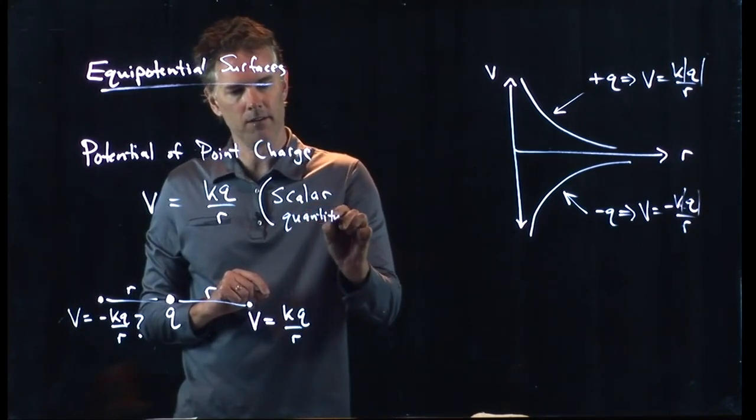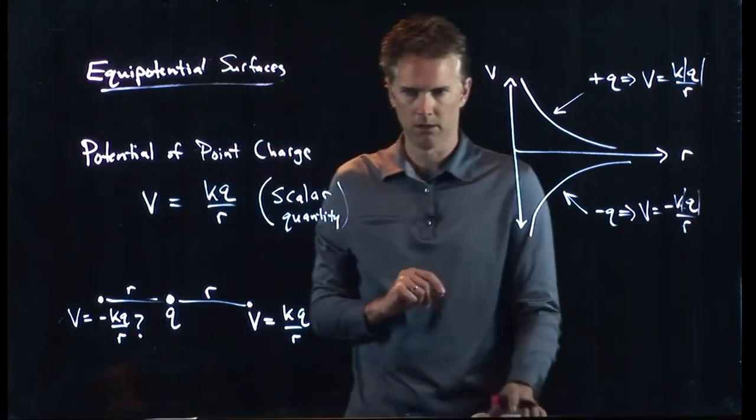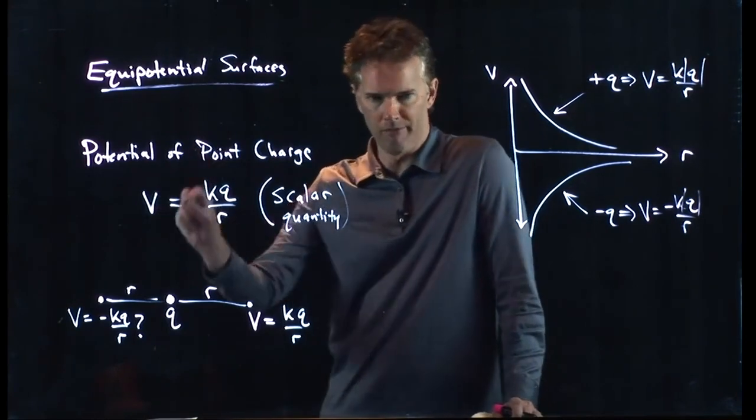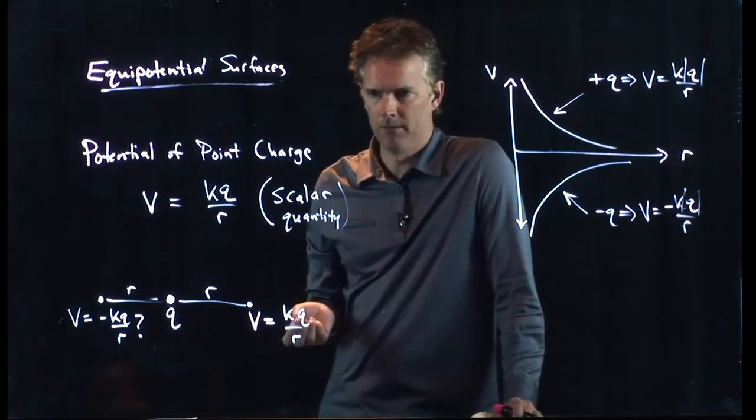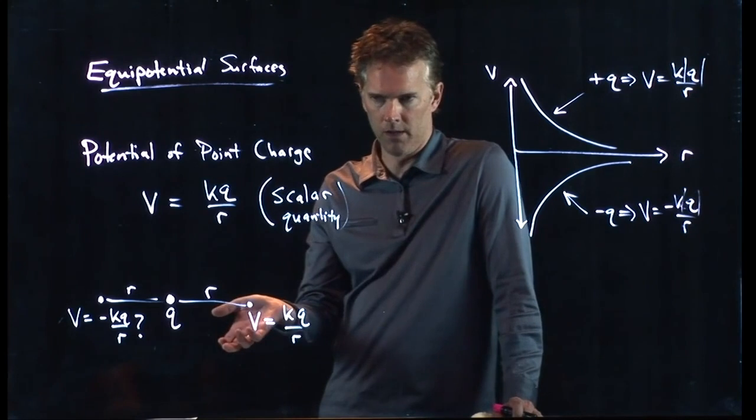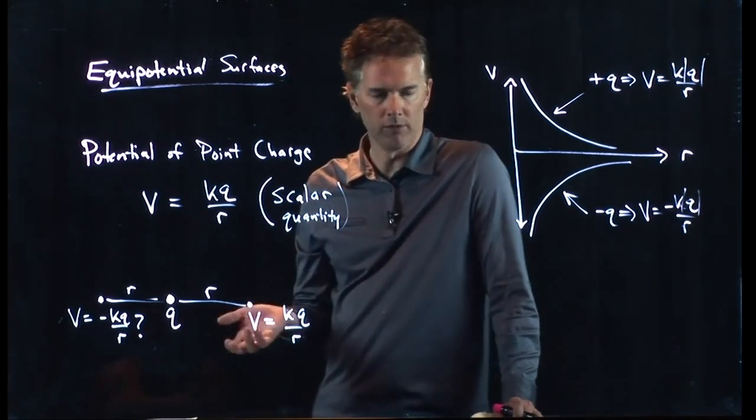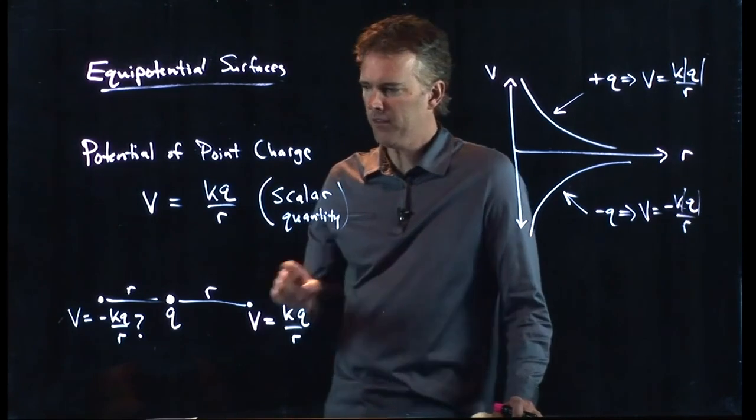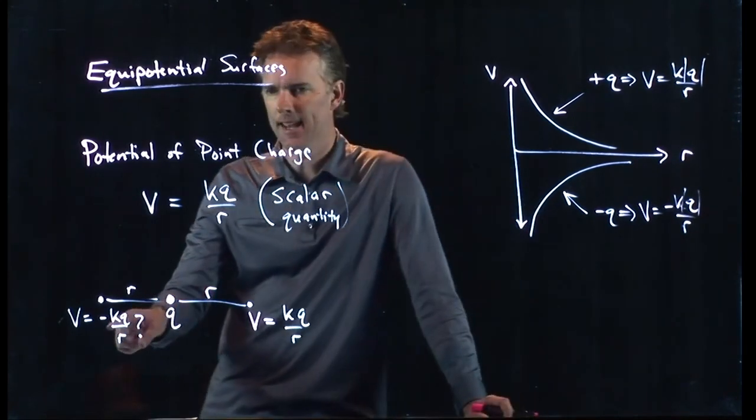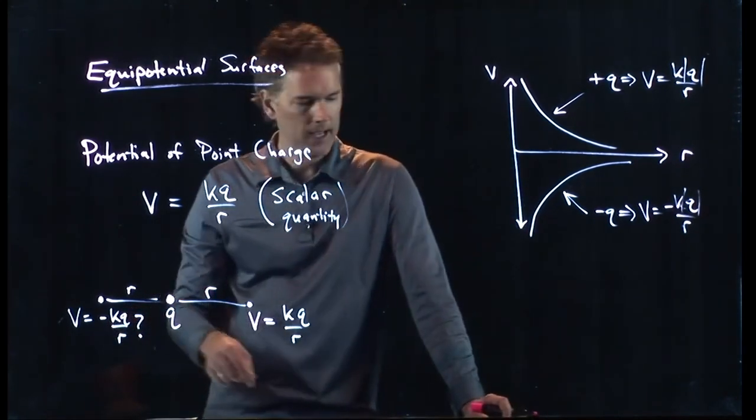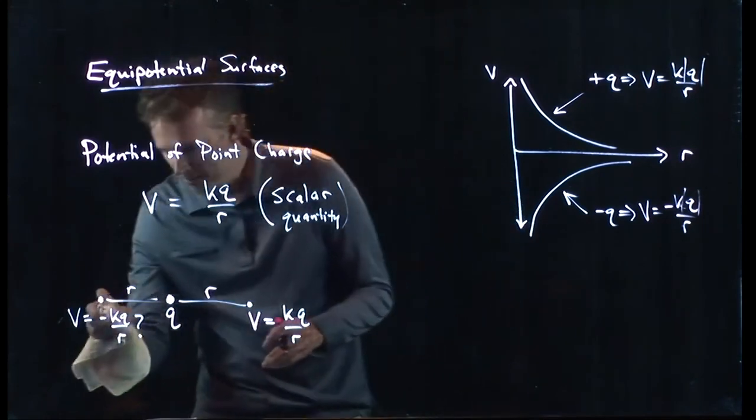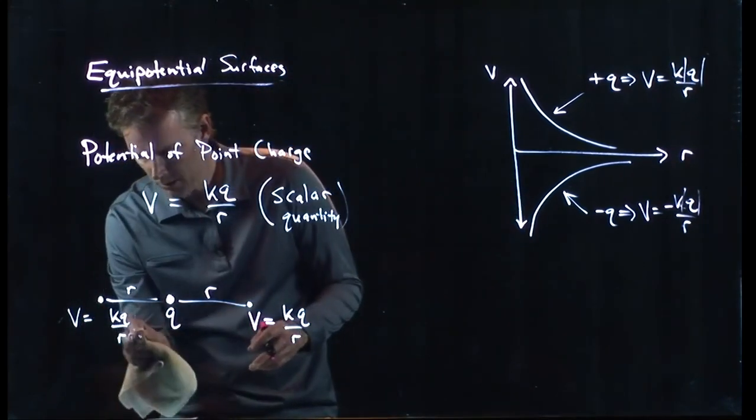It is not a vector. There's no direction associated with V. It's just a number. It's a hundred volts. It is a thousand volts. It's just a number. So this is not right. It's not negative KQ over R. It is, in fact, also positive KQ over R.